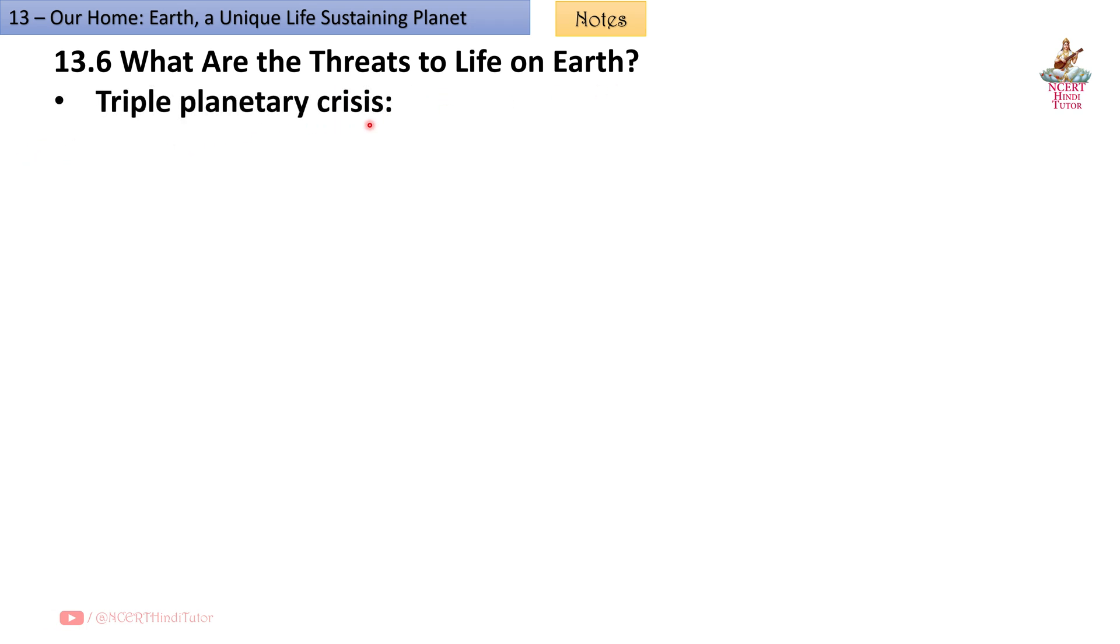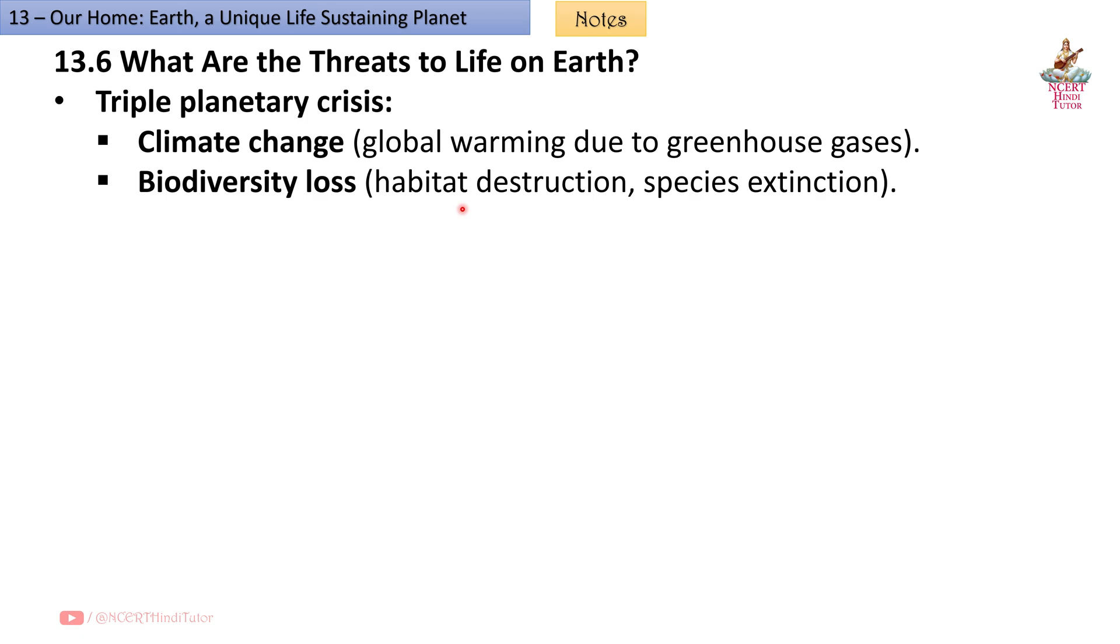13.6 What are the threats to life on earth? Triple planetary crisis: Climate change - global warming due to greenhouse gases. Biodiversity loss - habitat destruction, species extinction. Pollution - air, water, soil.